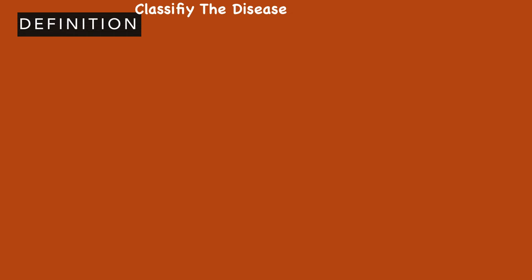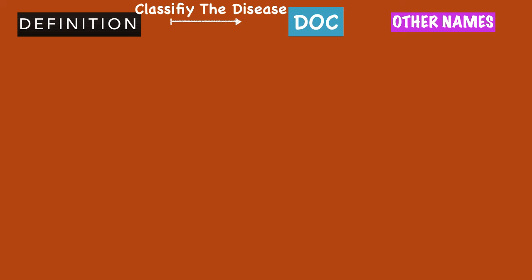You will mention whether it is a premalignant lesion, a skeletal developmental anomaly, a skin disease, or an autoimmune disorder. So you classify your disease, and then remember the mnemonic DOC — D for classifying the disease, O for writing the definition of the disease mentioned in your textbook, and C for the other name of the disease.